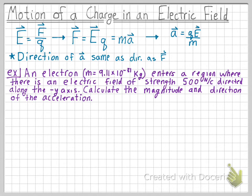Let's do an example. An electron enters a region where there is an electric field of strength 500 Newton per coulomb directed along the negative y-axis. Calculate the magnitude and direction of the electron's acceleration.